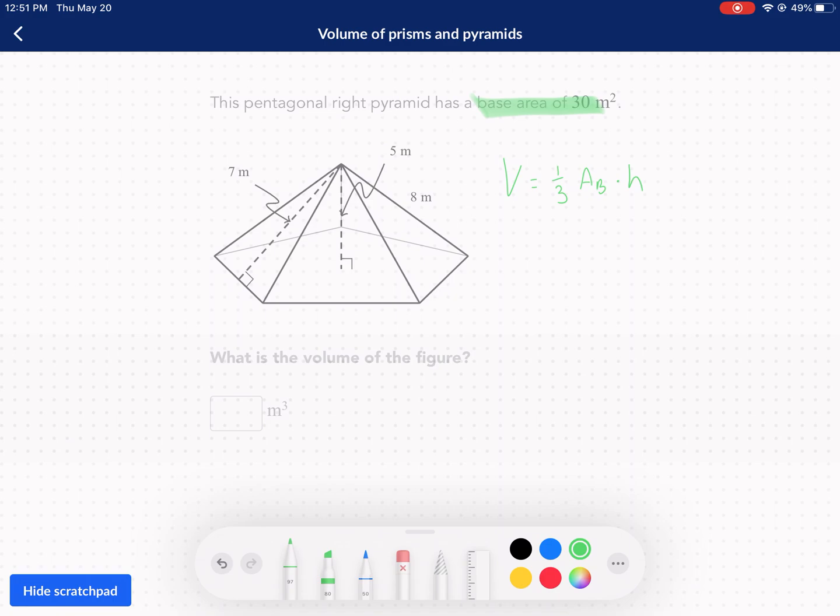Now the thing is we have to correctly identify the height. We're already told the base we already know is 30, so we're good there. We have 30, so we can plug that in for area of the base. And we have one third, that's part of our formula for the pyramid. And now we have to multiply by the height. Is it the seven or is it the five? It is the five.